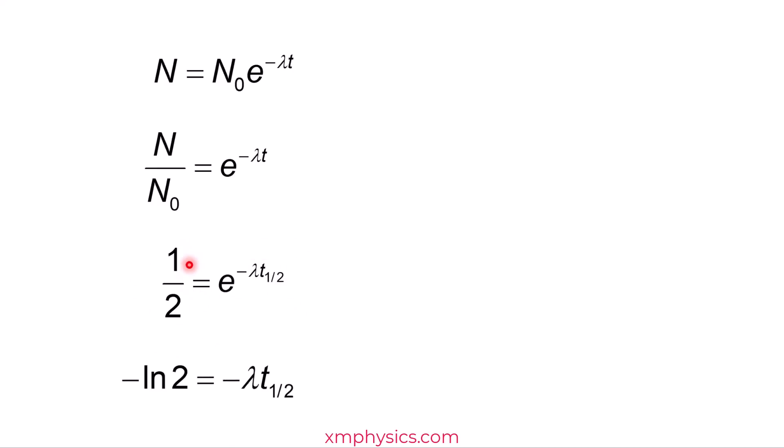Half is just to the power of negative 1. So it becomes negative log 2. On this side, when you take log E, it becomes 1. So we're left with this term. Tada! So half-life is equals to log 2 over lambda.